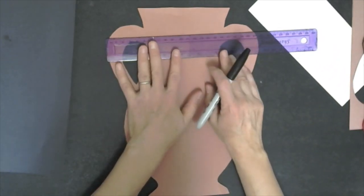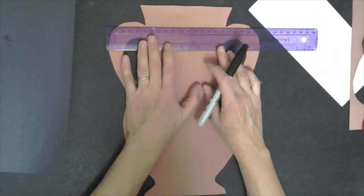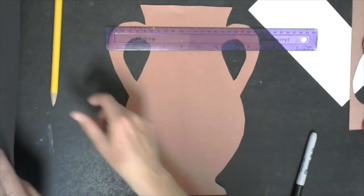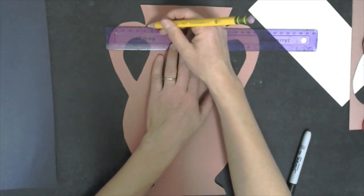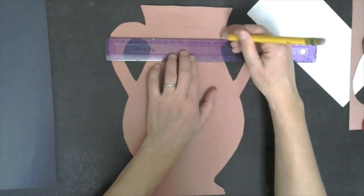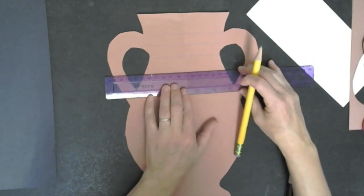Then you're going to start with your ruler and you're just going to create lines and this is where your patterns are going to go. You just want to space it about an inch in between and that is up to you.